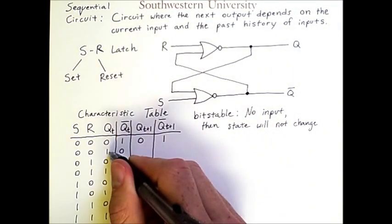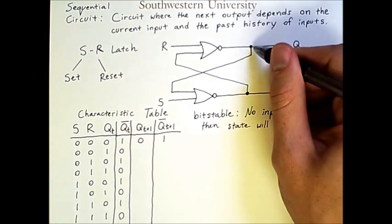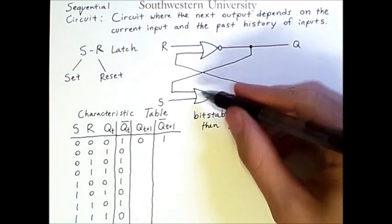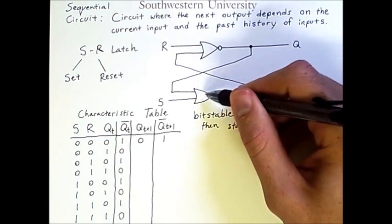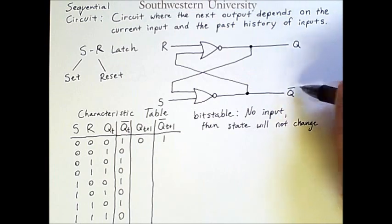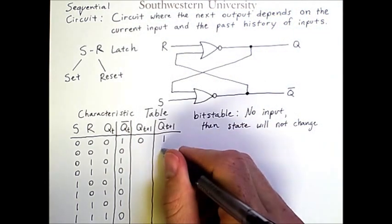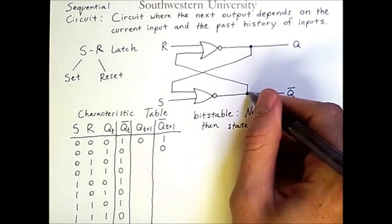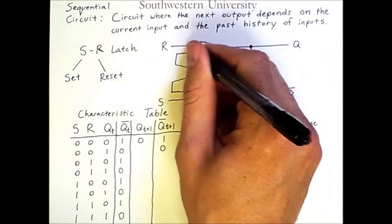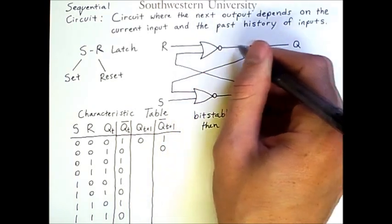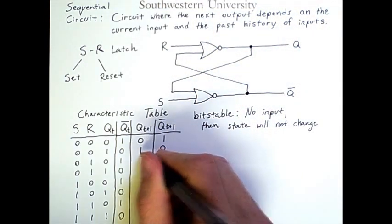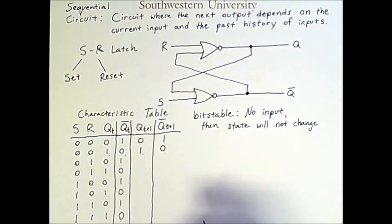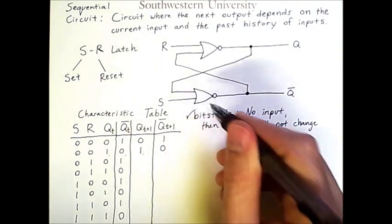However, if Q had previously had a value of one, then that value of one would have gone down this line into this NOR gate. One or zero is one. Negated is zero. I get a zero coming out here. So the next value of NOT Q is zero. And then that same zero goes along this line. I have zero or zero, negated becomes a one. The output is one. Once again, these values did not change. That means the circuit is bit stable.